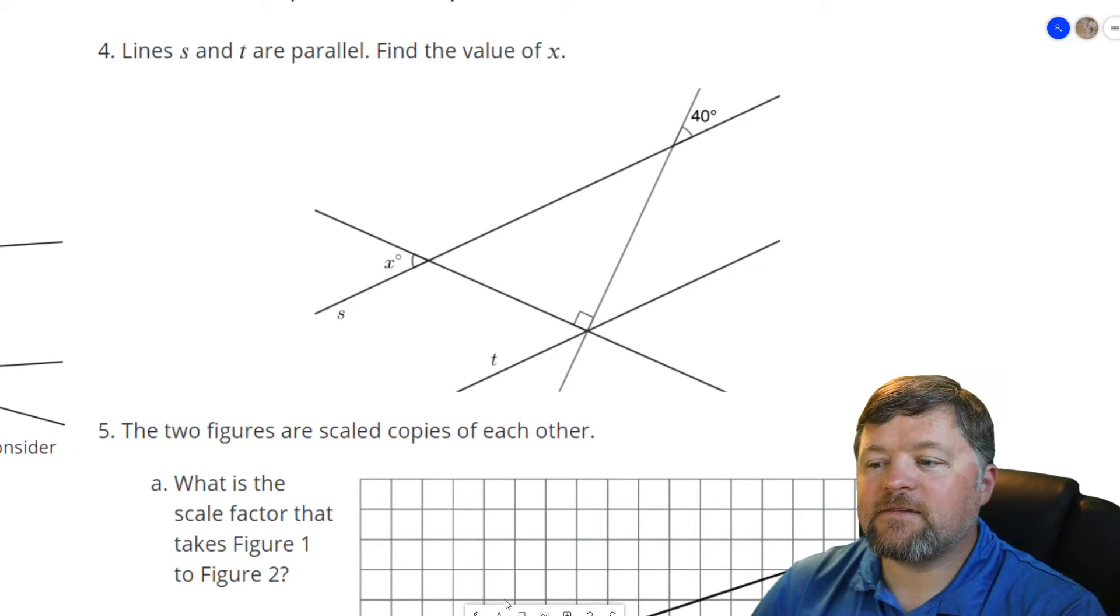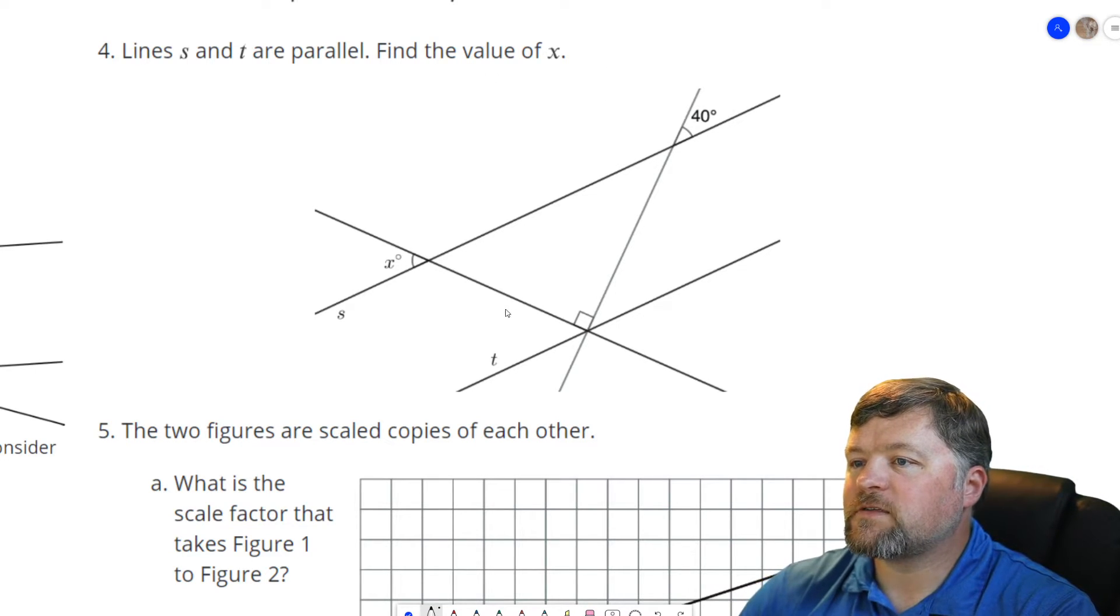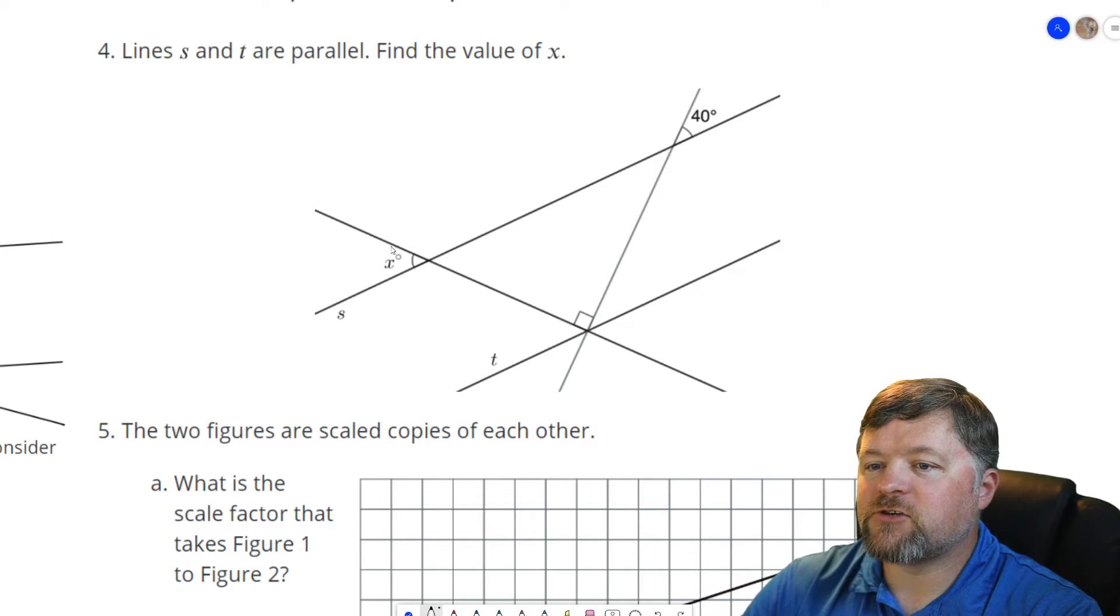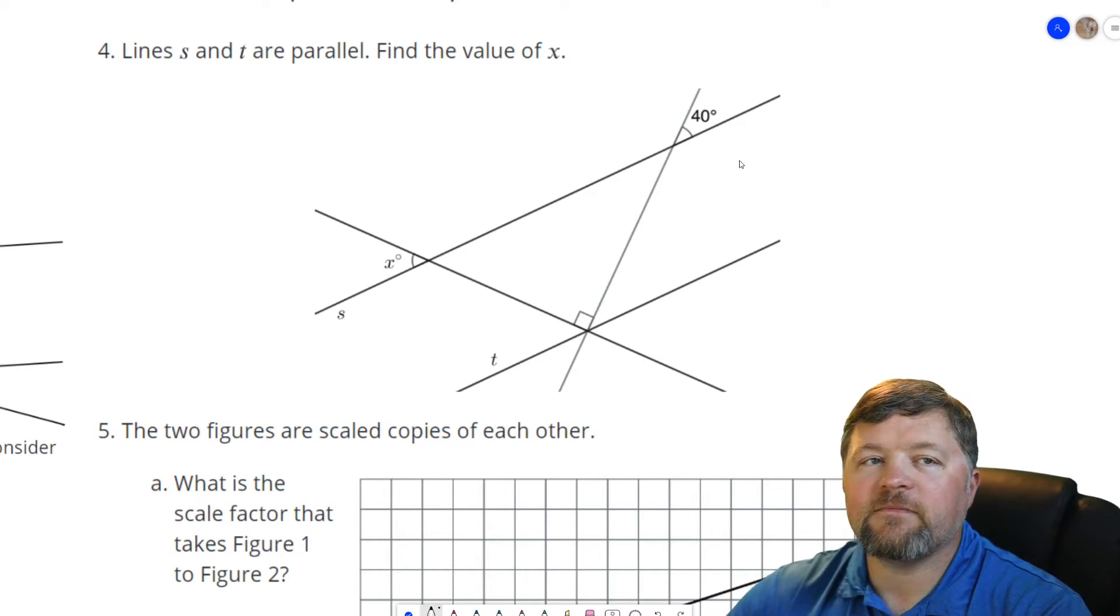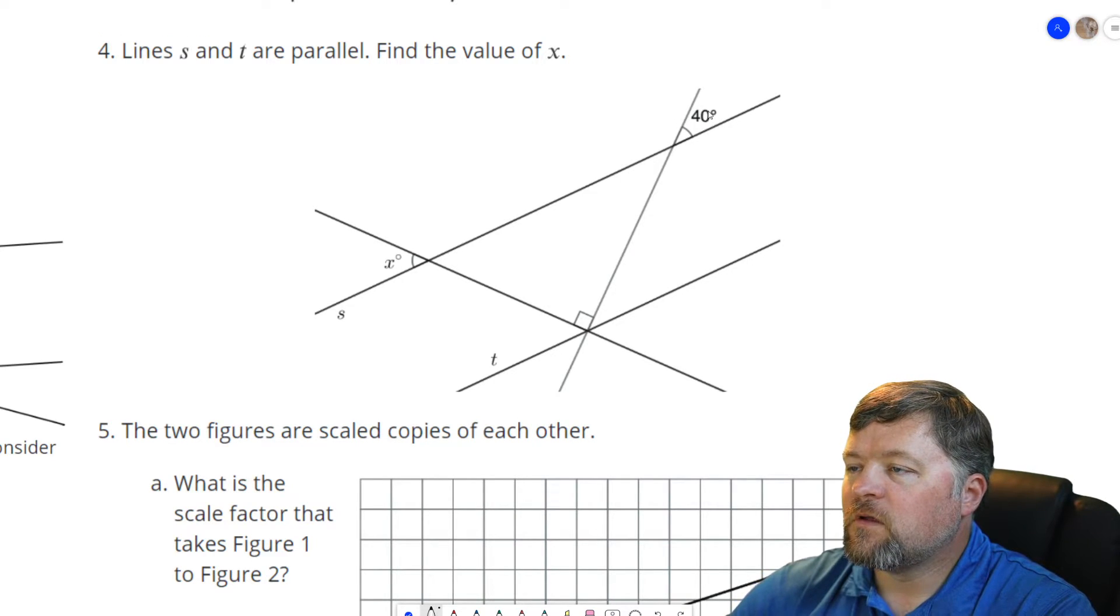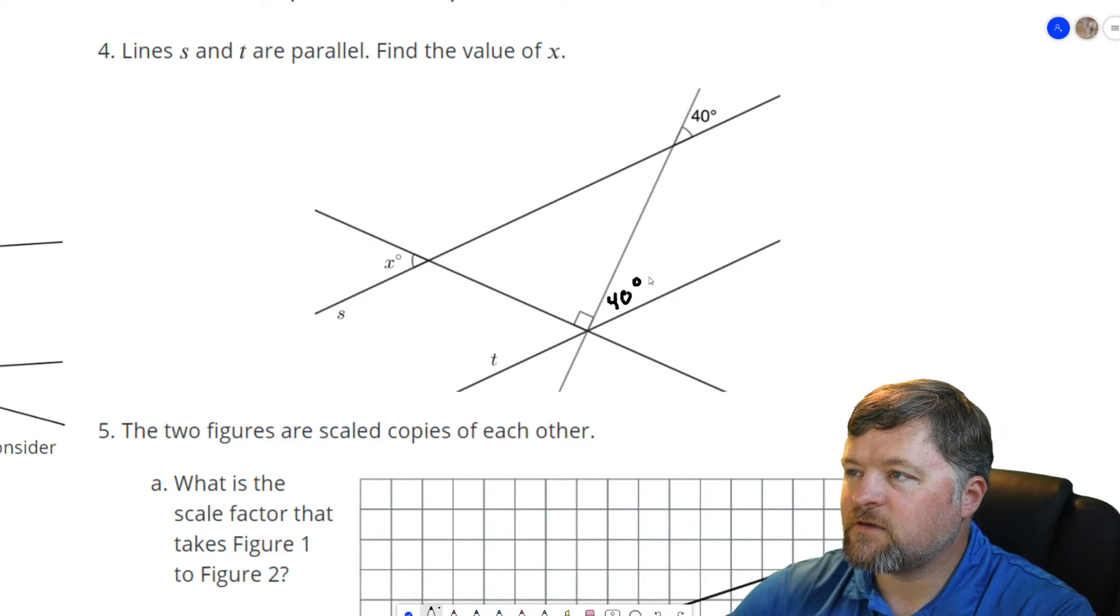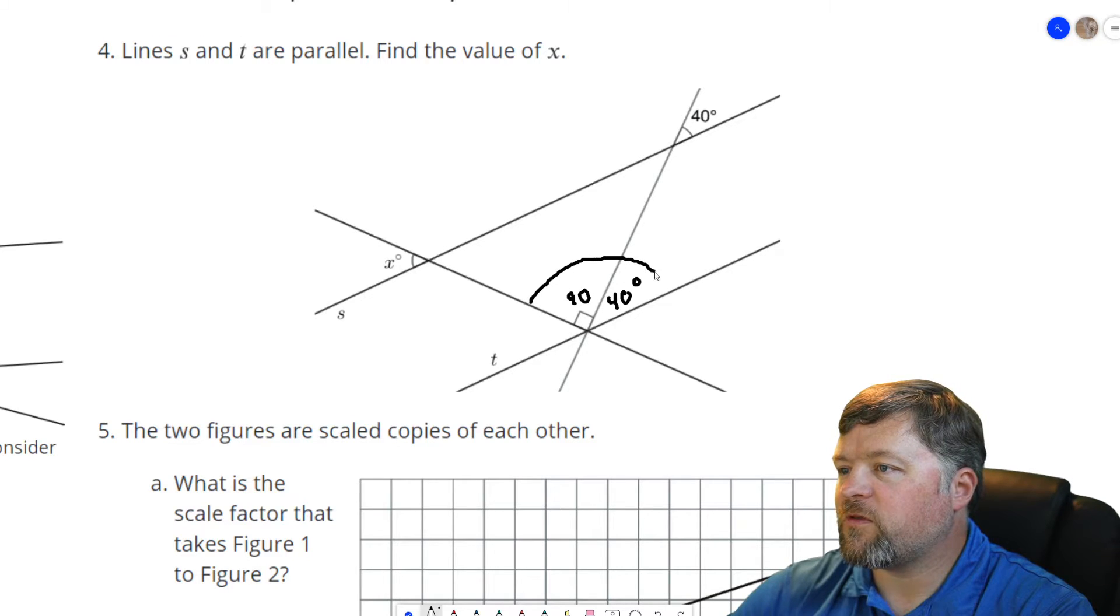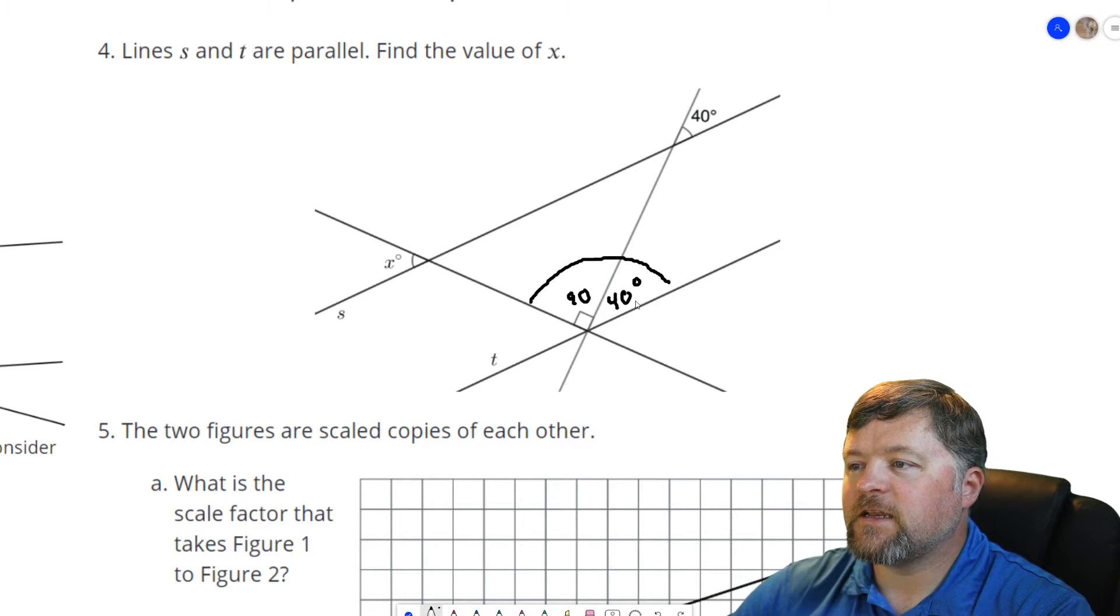Lines S and T are parallel. Find the value of X. So S and T are parallel to each other. We have to find the measurement of X. So this one requires quite a few steps. We have to think about what we know. Well, because S and T are parallel, whatever this angle is has to be congruent to this angle. So that's 40 degrees. This is 90, which means this whole thing has to be 90 plus 40, which is 130 degrees.